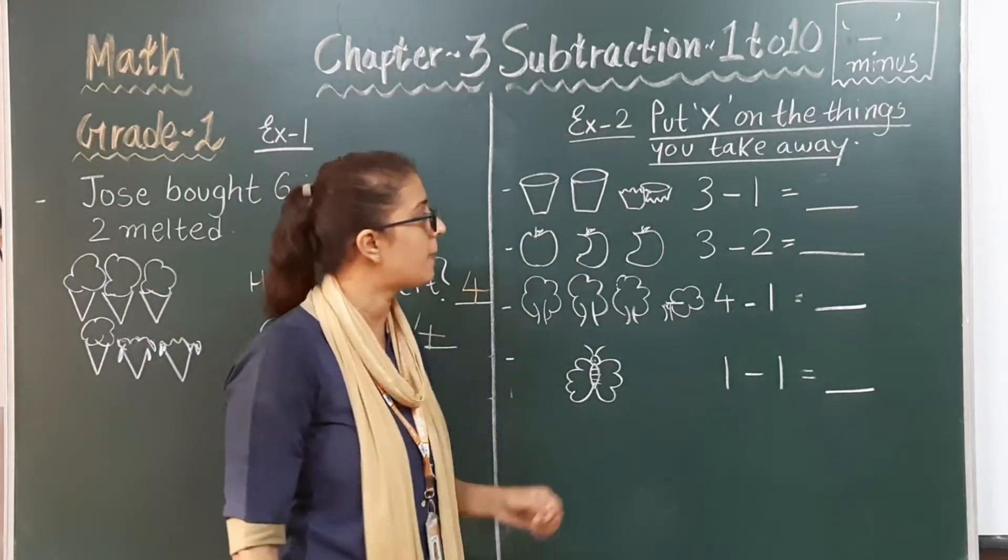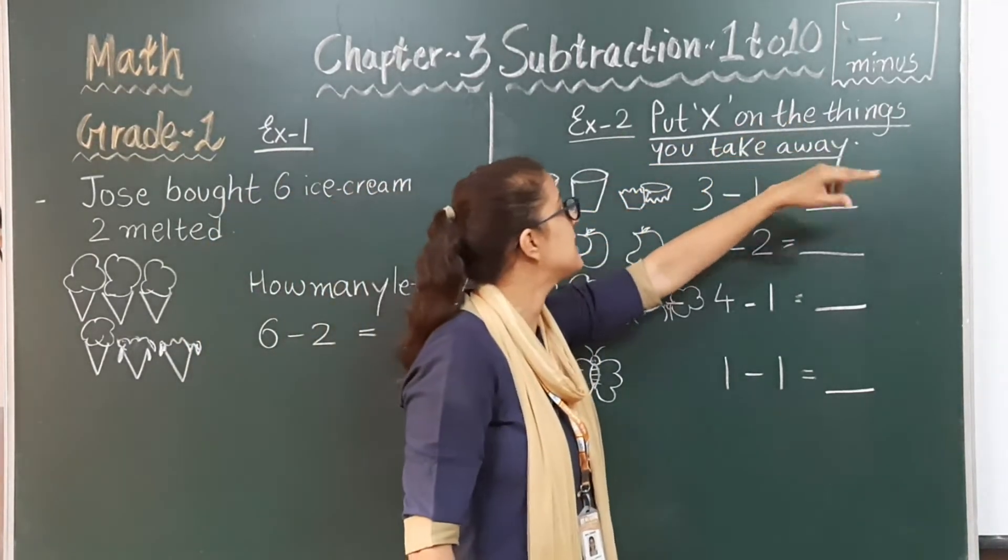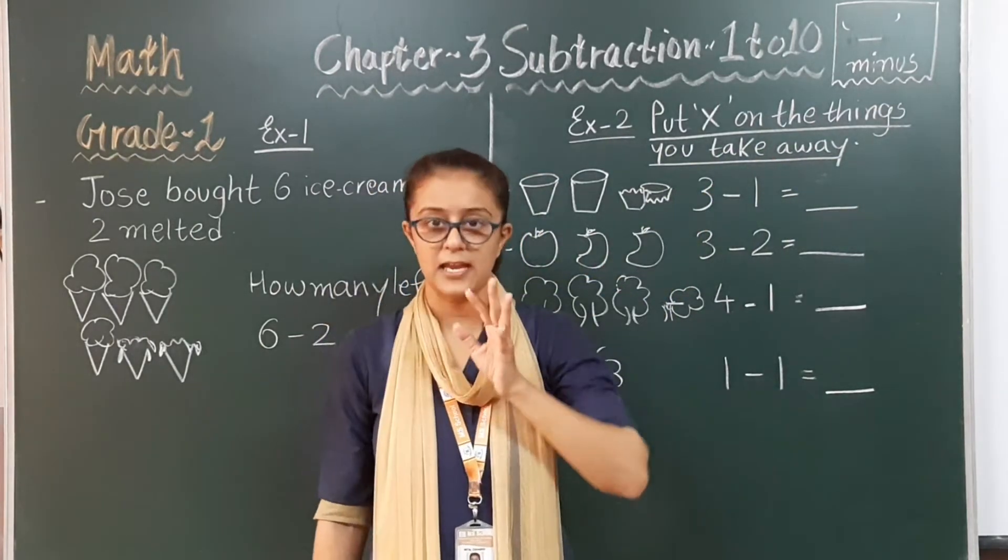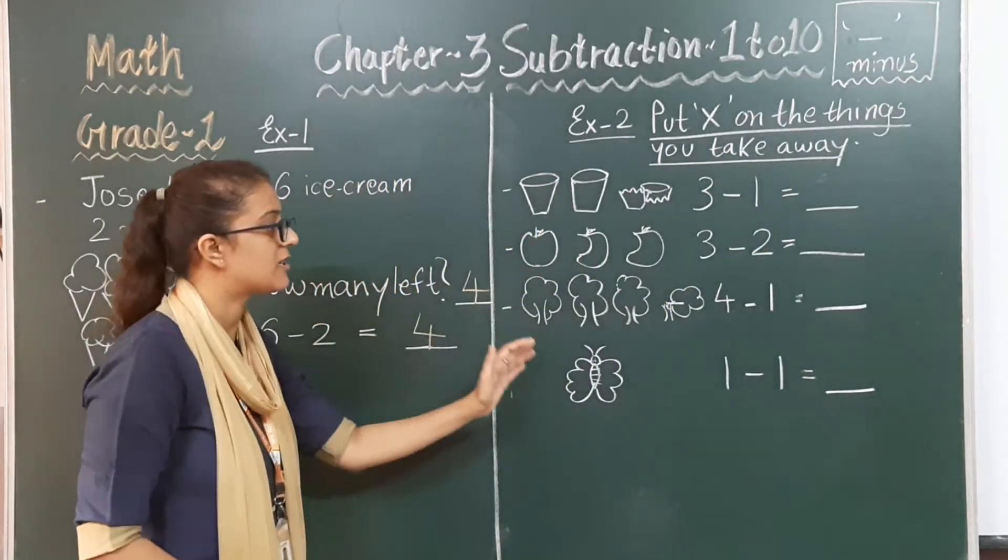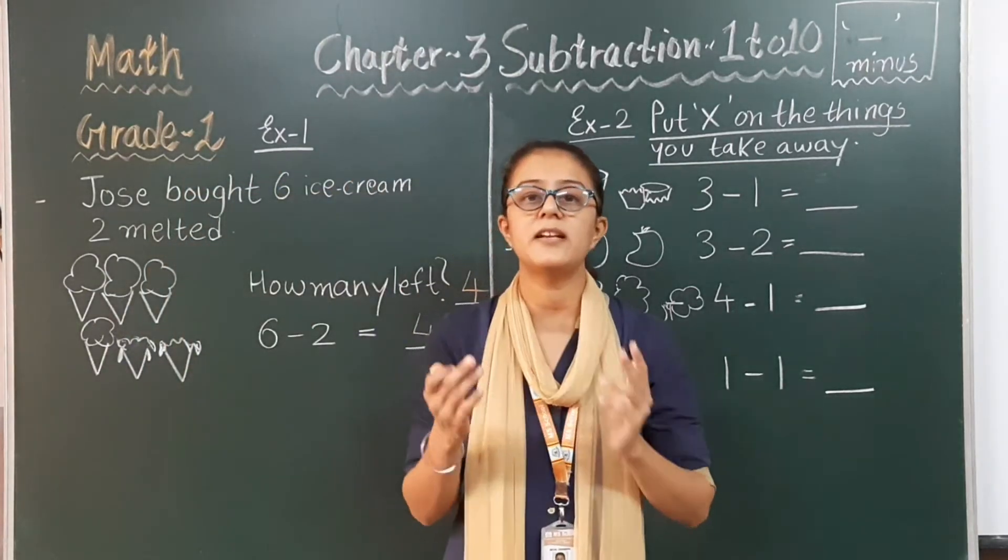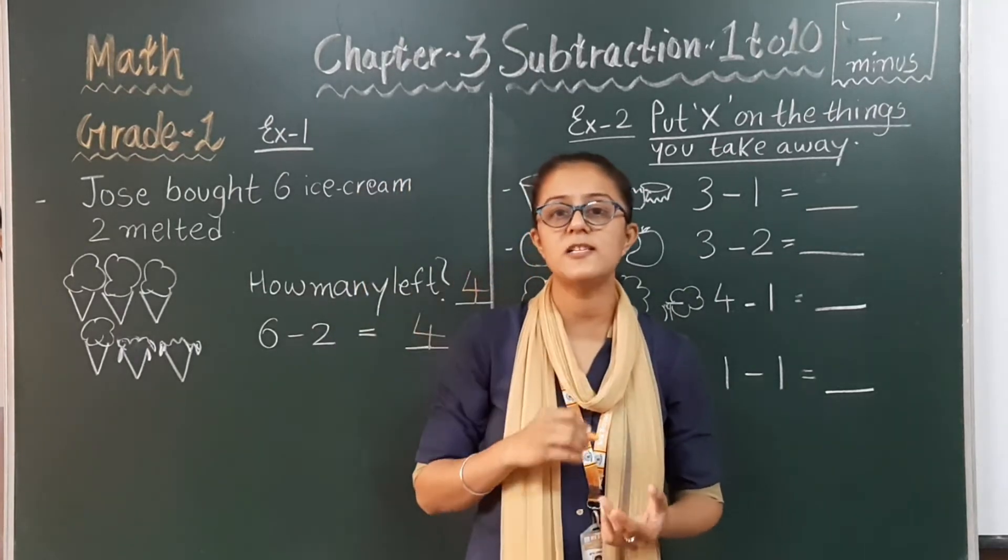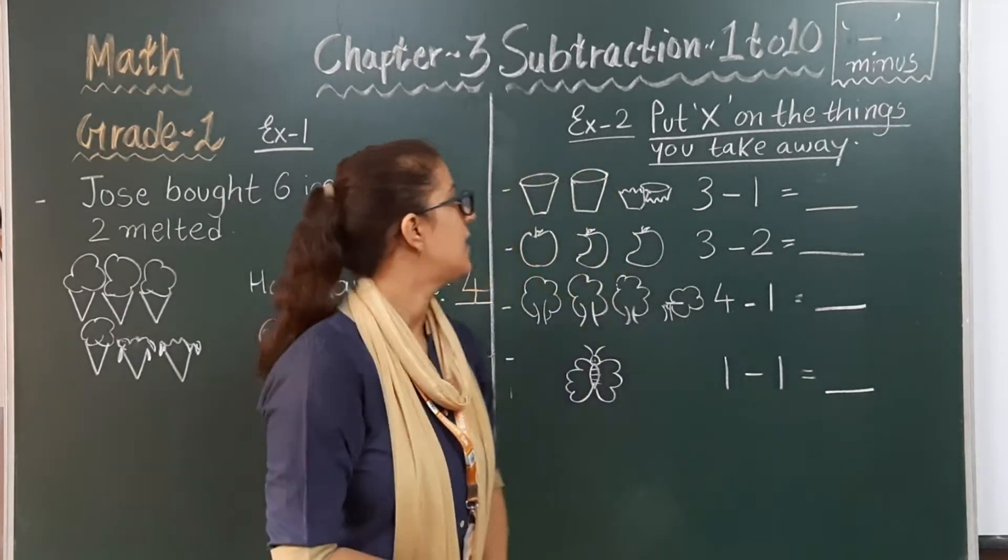It is also mentioned in your Kenauti book. Put cross on the things you take away. We have to cross the pictures we need to take away, meaning the picture we need to minus, we have to cross it. Number one.